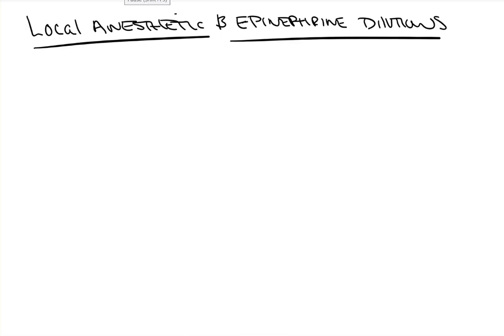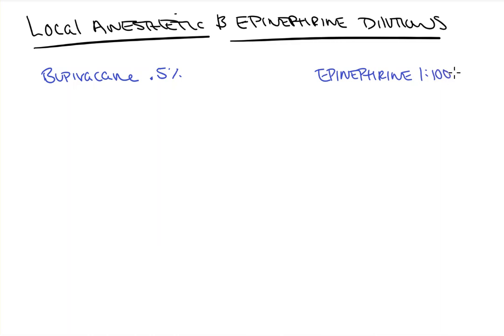Hi everyone. On this video from Count Backwards from 10, we're going to take a look at local anesthetic and epinephrine dilutions — what that means when we're posed with questions or clinical scenarios. We'll cover things like bupivacaine 0.5% and epinephrine 1 to 100,000. If we can learn it here, you can apply it any time you encounter these, and there are some shortcuts you'll be able to take.